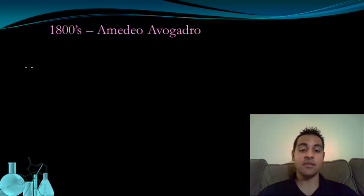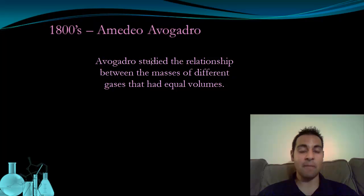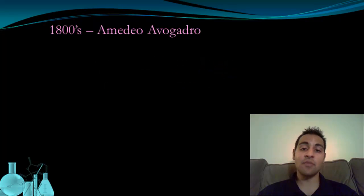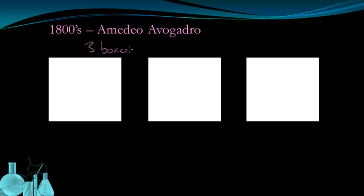In the early 1800s, there was a scientist named Amadeo Avogadro. Avogadro was exploring the relationship between the masses of different gases that had the same volume. To get an idea of what he was talking about, here we have three boxes, and they all have the same volume. It's also important to mention that these boxes are kept at the same pressure and the same temperature, because pressure and temperature have a huge impact on the behavior of gases.